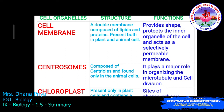Chloroplast is present only in plant cells and contains chlorophyll pigment, which gives a green color to the cells. Its function is to serve as the site of photosynthesis.